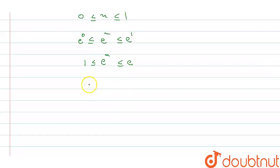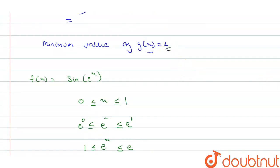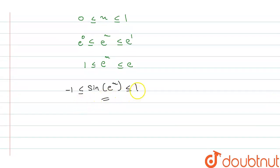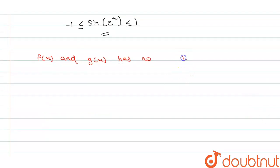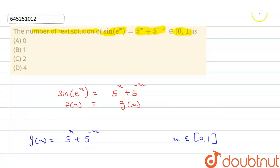We know that sin(e^x) always lies between -1 and 1. So the minimum value of g(x) is 2 and the maximum value of f(x) is 1. Therefore, there is no intersection point of f(x) and g(x), meaning there are no solutions. So option A is correct.